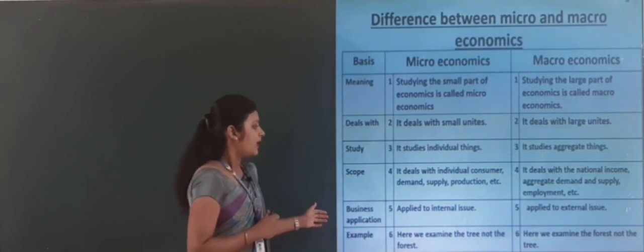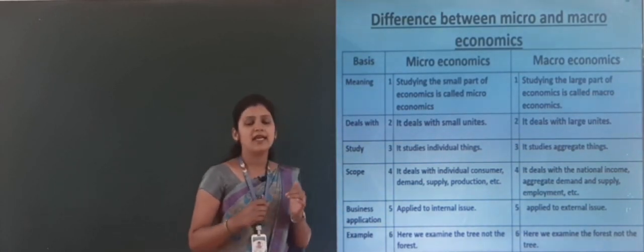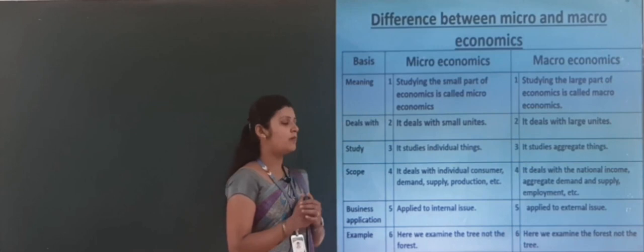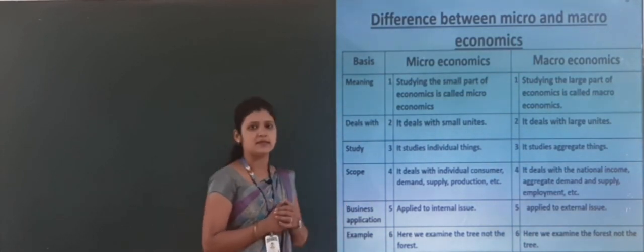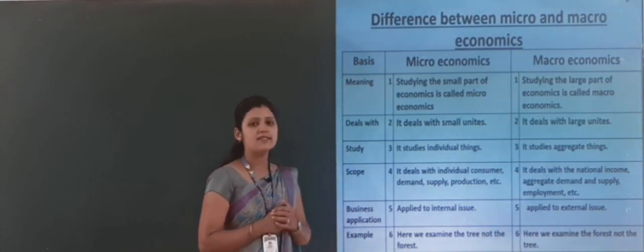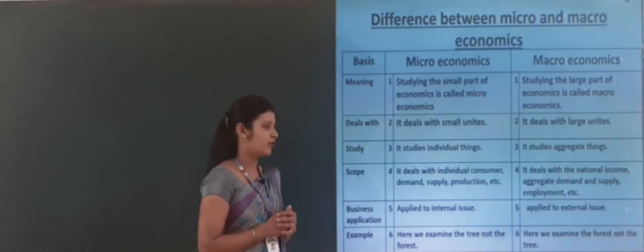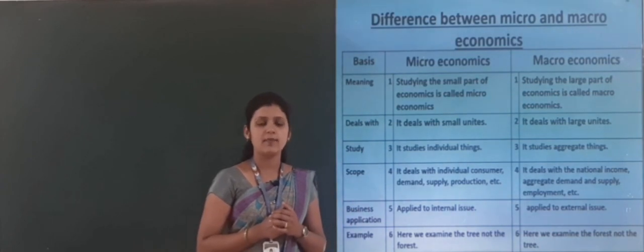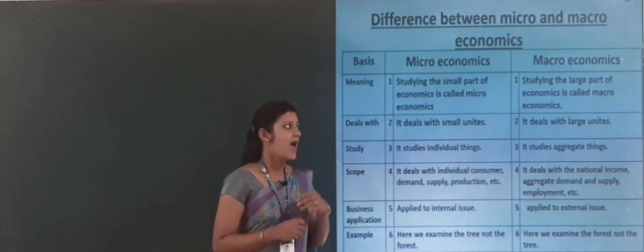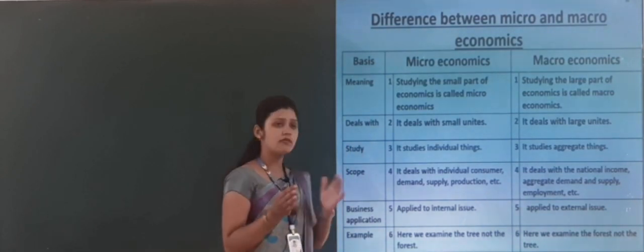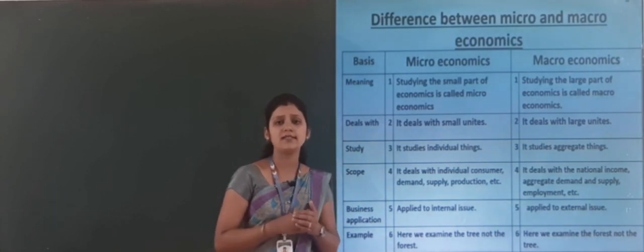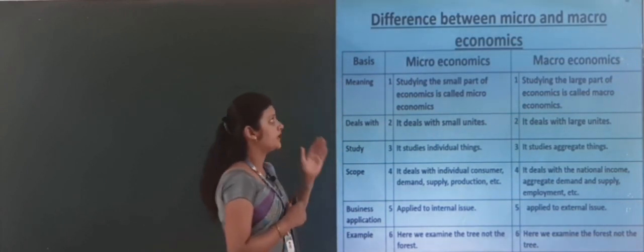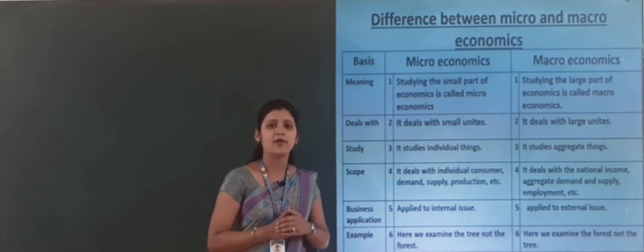Microeconomics is applied to internal issues, while macroeconomics is applied to the external issues of business. The best example: in microeconomics, we examine the trees, not the forest. Under macroeconomics, we examine the forest, not the tree. This picture shows the difference between microeconomics and macroeconomics.